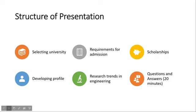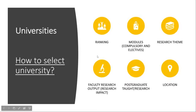Let's start with the first section: selecting our university. Normally we only look at the ranking and apply for top-ranked universities. But sometimes the research area you want doesn't exist there, and you find out only after going through the whole admissions process. So yes, you can look at rankings — target universities in the top 50 or top 100 — but there are also other important features you need to consider.